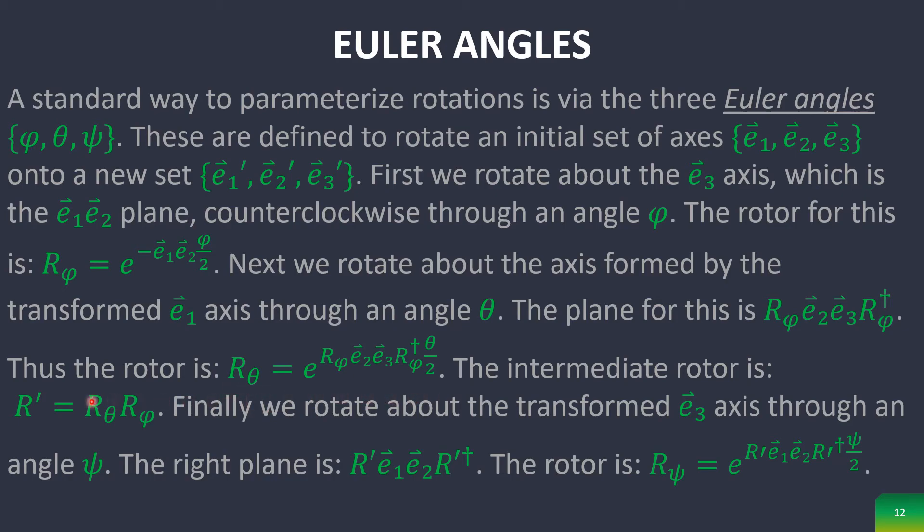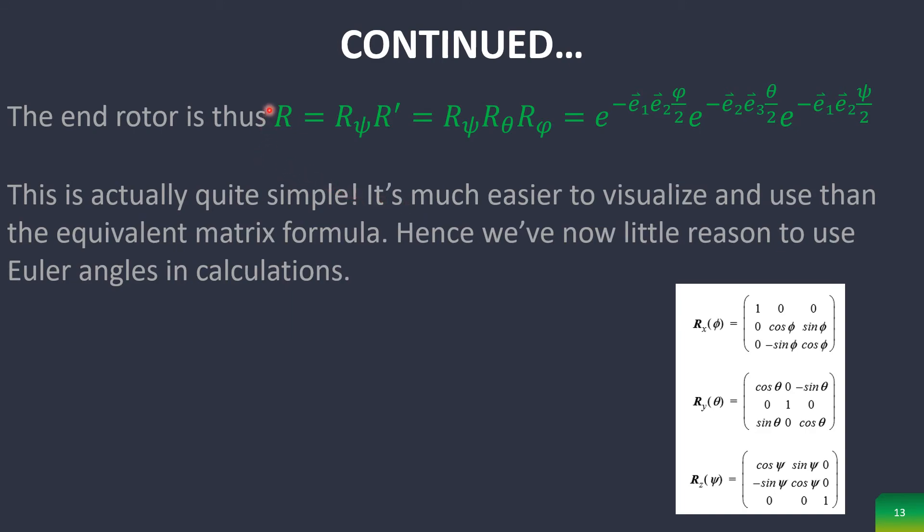The intermediate rotor is R primed which is equal to R theta times R phi. Finally we rotate again about the transformed E3 axis through an angle ψ. The correct plane for this is given. Thus the final rotor is this which brings us to the end rotor, which in reality is quite simple and is much easier to visualize and to compute than the equivalent matrix formula which I have included down here.